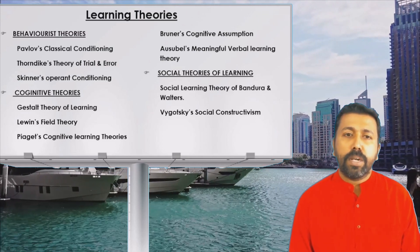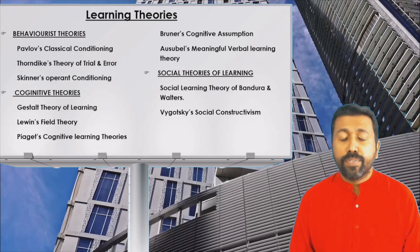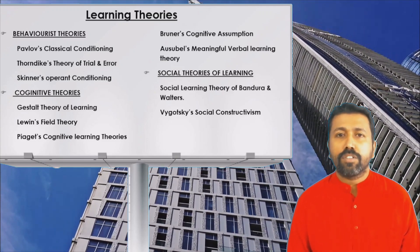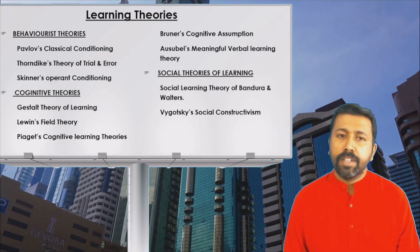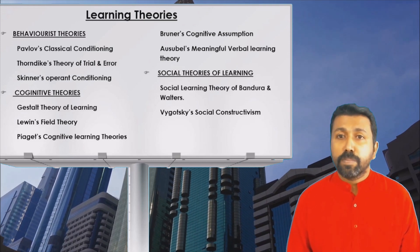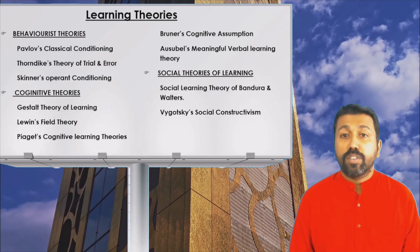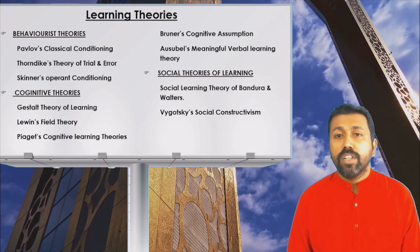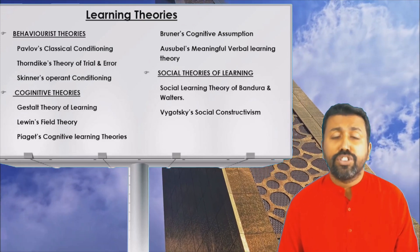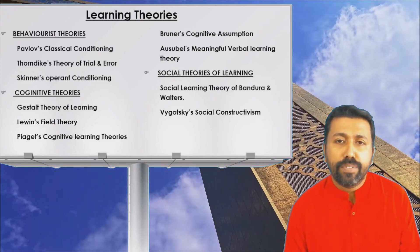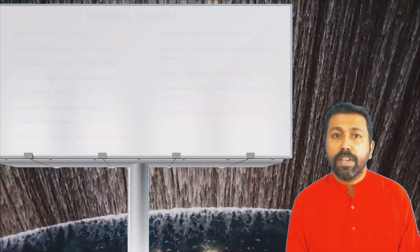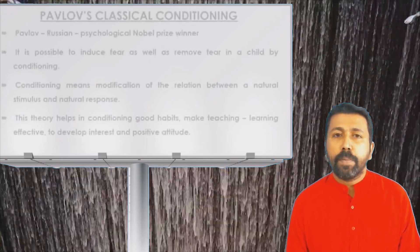Cognitive theories deal with the cognitive structure of the mind. Theories include the Gestalt theory of learning, Lewin's field theory, Piaget's cognitive learning theories, Bruner's cognitive assumption, and Ausubel's meaningful verbal learning. Social learning theories include the social learning theory of Bandura and Walters, and Vygotsky's social constructivism — one of the most prominent theories in the present era. Please remember the authors, founders, and propounders of all these theories.